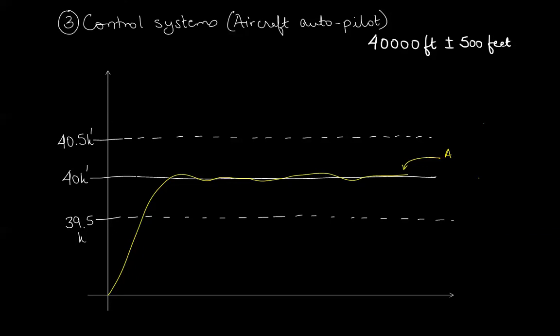System A climbs the aircraft to 40,000 feet and does a reasonably good job of keeping it there. System A therefore is being accurate and precise.